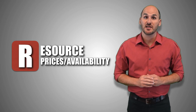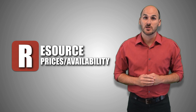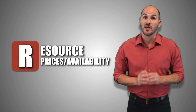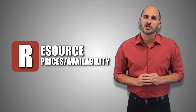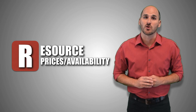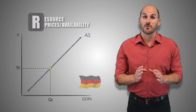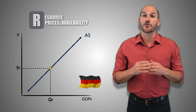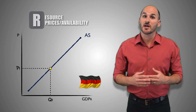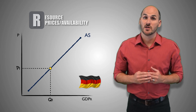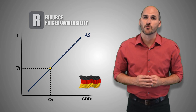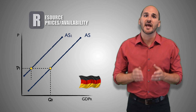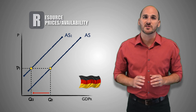Natural disasters and other world affairs can change resource prices and availability. A change in any of these factors can be a catalyst that causes an increase or decrease in input costs and availability, which fundamentally changes aggregate supply and therefore the economy as a whole. For example, suppose the price of steel increases in Germany. Steel is a vital resource for the production of goods and services in the German economy, and as it becomes more expensive, production costs increase and firms will produce lesser quantities of real GDP output at every price level. This increase in resource prices will cause a decrease in short-run aggregate supply across the entire economy.